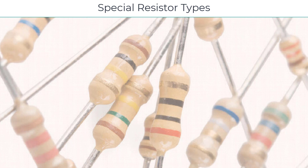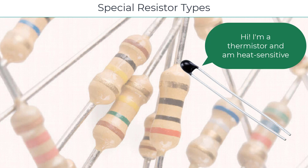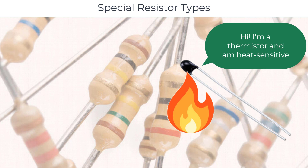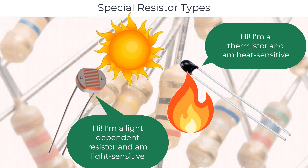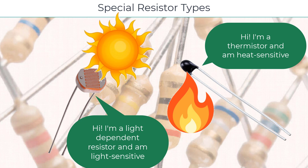Let's talk about specialty resistors for a minute because you'll be using these in your projects too. Some resistors are sensitive to heat and light and vary their resistance in accordance with temperature or brightness. A thermistor is a type of resistor that varies its resistance with temperature. For example, if I wanted to build a circuit that would turn on a fan in the attic when it reaches a certain temperature, I may use a thermistor. Light-dependent resistors, more commonly known as photocells or electric eyes, vary their resistance with the amount of ambient light. If I wanted to turn on a light automatically when it gets dark, I might use an LDR.